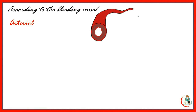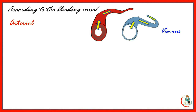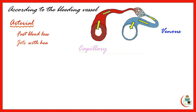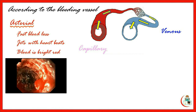Hemorrhage can be classified in different ways. One classification is according to the bleeding vessels: it may be arterial bleeding if the injured vessel is an artery, venous when a vein is cut, or capillary hemorrhage. Arterial bleeding is a fast blood loss that occurs in jets, synchronous with the heartbeats. The blood is bright red in color, as shown in the following video.